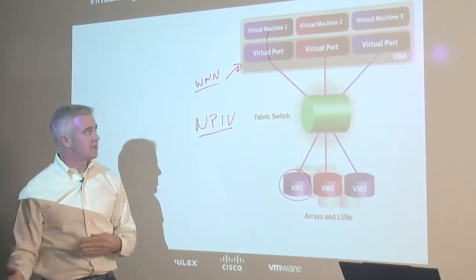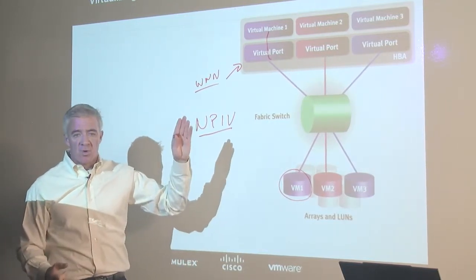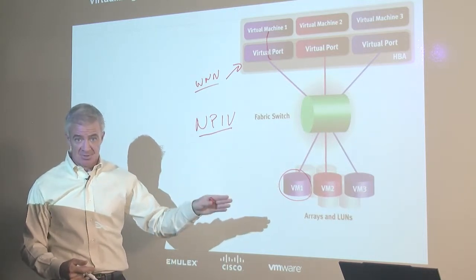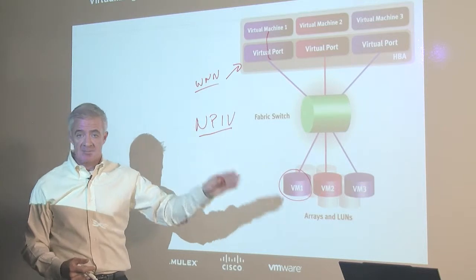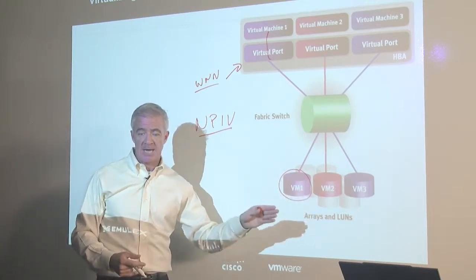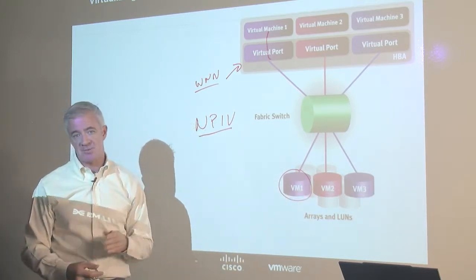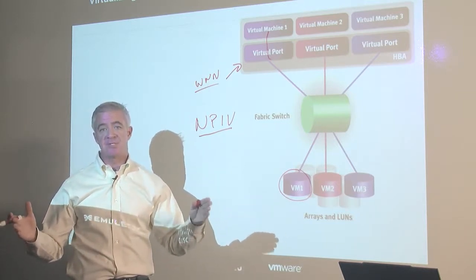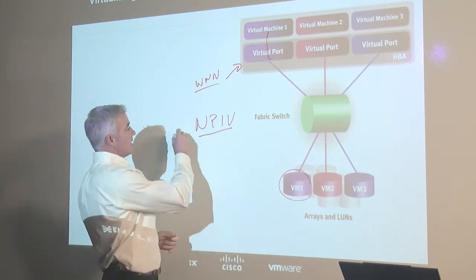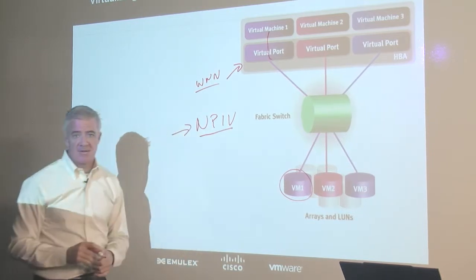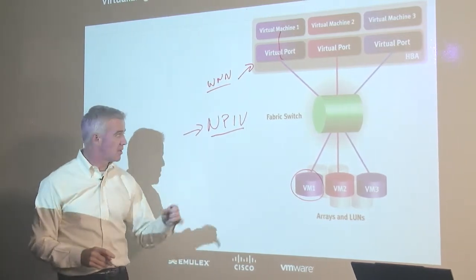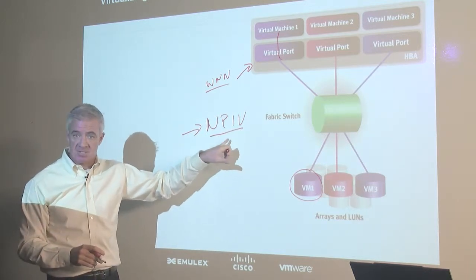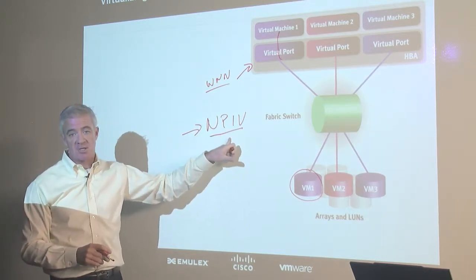When we talk about this with respect to scalability, earlier we were looking at consolidation rates of 20 VMs per physical server. With the Nehalem systems and now looking forward to 2011 with Intel about to release Romley, those consolidation rates are going to increase even higher. So having a controller that can support a high number of virtual ports is going to be significant for that consolidation effort.